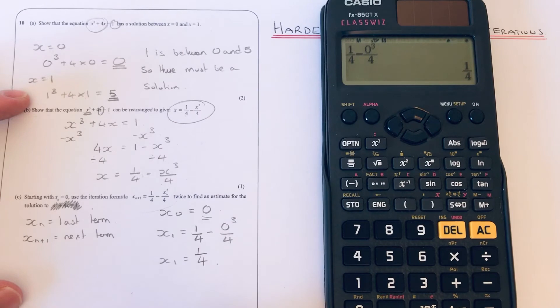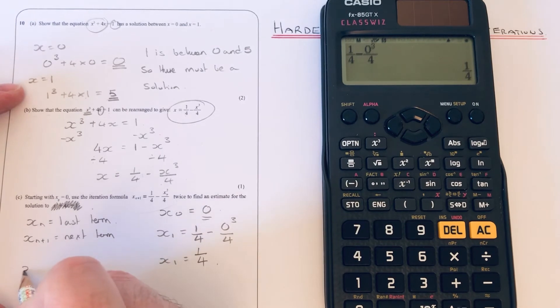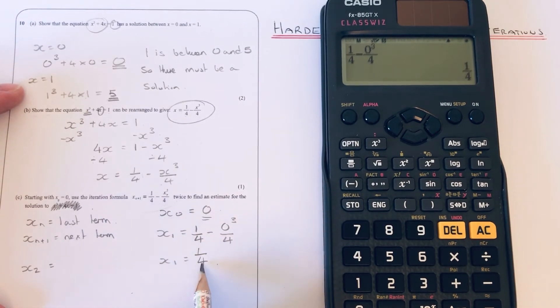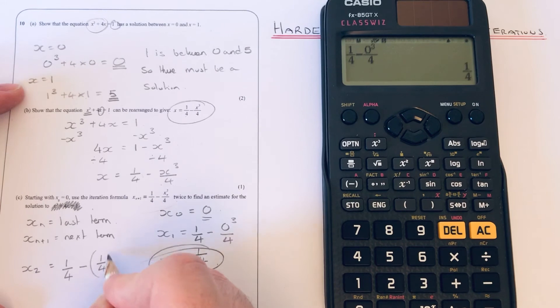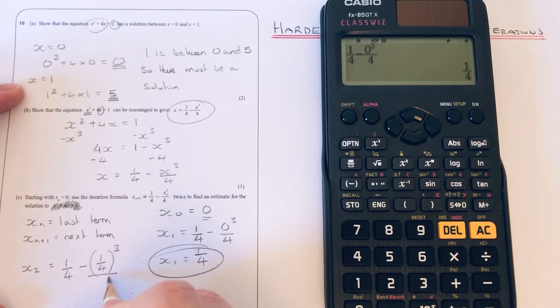So we now need to work out x₂ because it says do it twice. To get x₂, we need to put in that last answer that we've just worked out, so we put in a quarter. So it'll be ¼ - (¼)³/4.